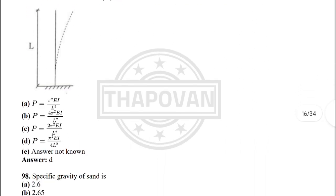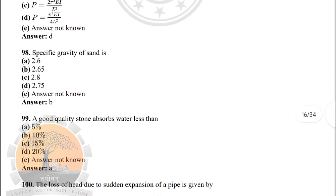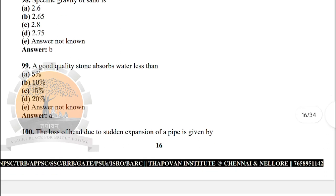Next: what is the critical load value of a column with one end fixed and the other end free? — the correct answer is option D: P = π²EI / (4L²). Next: specific gravity of sand is — option B: 2.65.